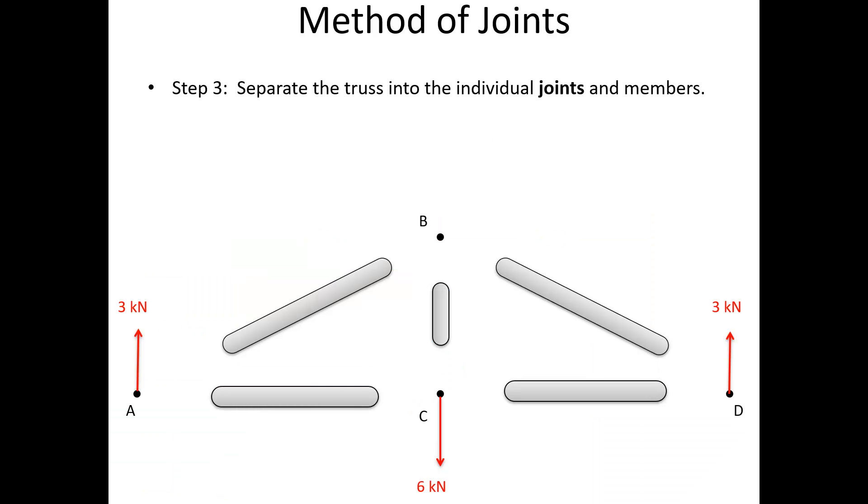Alright, so once I figure out those three forces, I'm going to move on to the next step. So step three is we're going to separate the truss into individual joints and individual members. So the joints, this is like the pin in our pin joint. So pin A, pin B, pin C, and pin D. And I've drawn in the known forces. So this 3 kilonewtons is the reaction force. The x force over here was actually equal to zero. So I've got the external reaction forces acting on my point. This is the load force in the middle acting on that joint there.